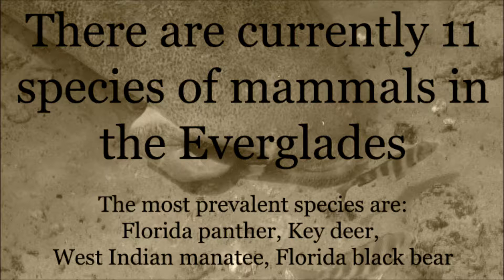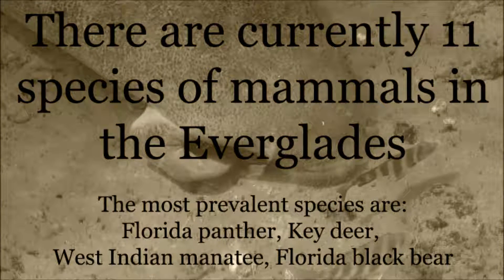The mammals group has 11 members, the most prevalent of which are the Florida panther, the key deer, the West Indian manatee, and the Florida black bear. The animals in this group primarily feed on fish or other mammals.